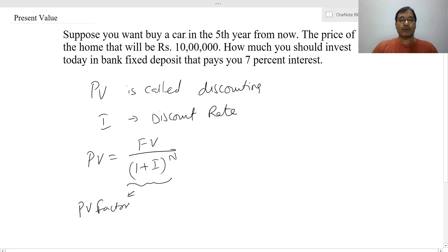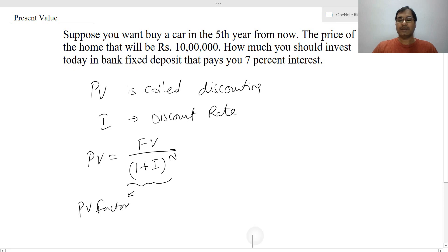Suppose you want to buy a car in the fifth year and the price of the car is 10 lakhs, and how much you should invest today in a bank fixed deposit that pays 7 percent interest. So you know the future value, that is your FV is 10 lakhs, and i your discount rate is 7 percent, that is 0.07, and n is 5 years.